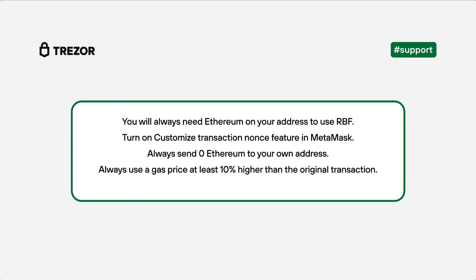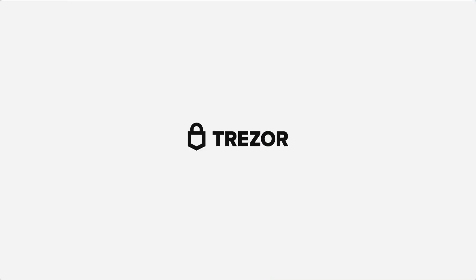There is a similar RBF feature for Bitcoin that works the same way in Trezor Suite. Please see the link in the description for the manual. Hopefully, this video helped you to understand how to bump fees or cancel any pending transaction in your Ethereum wallet.